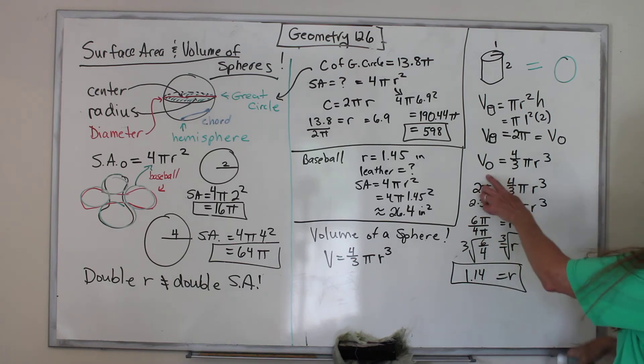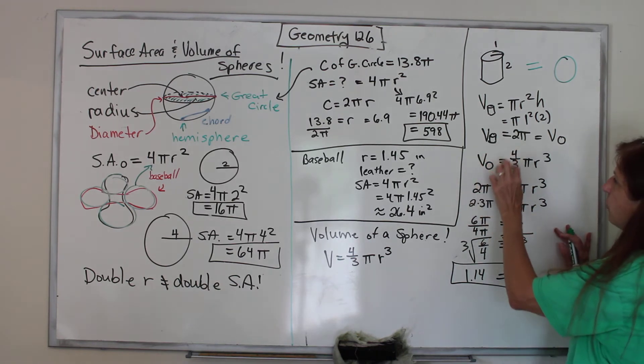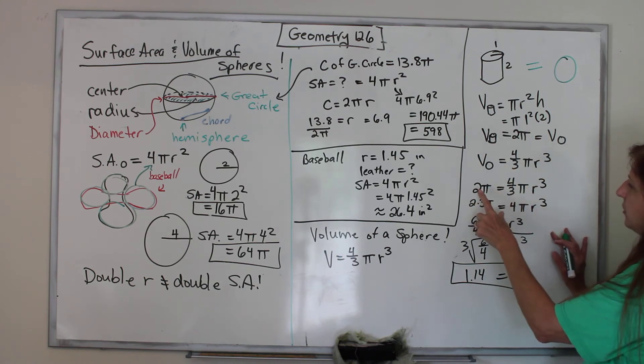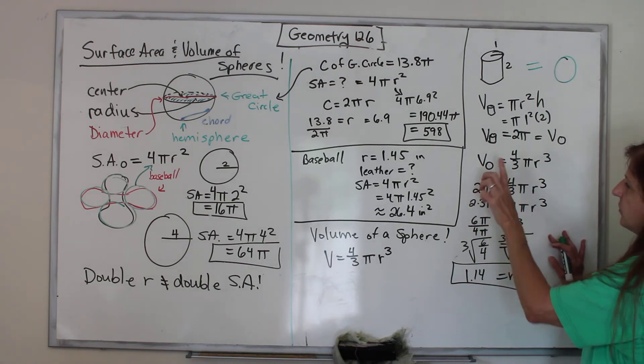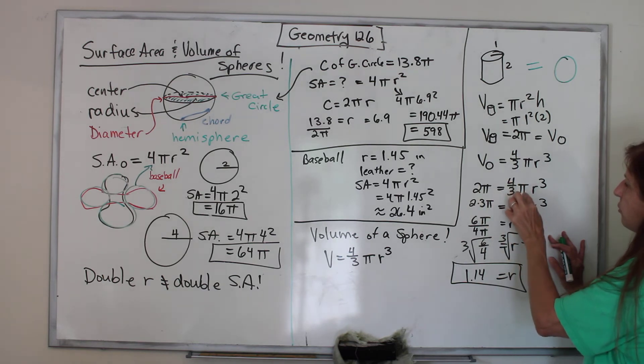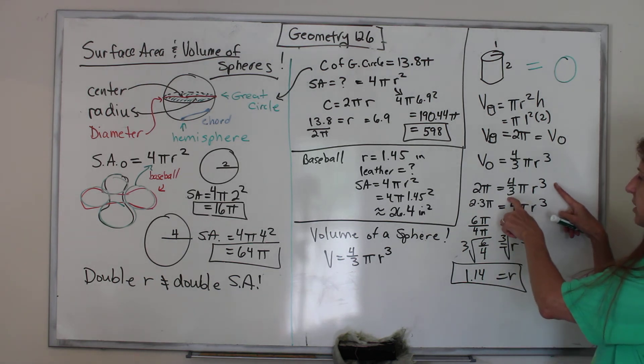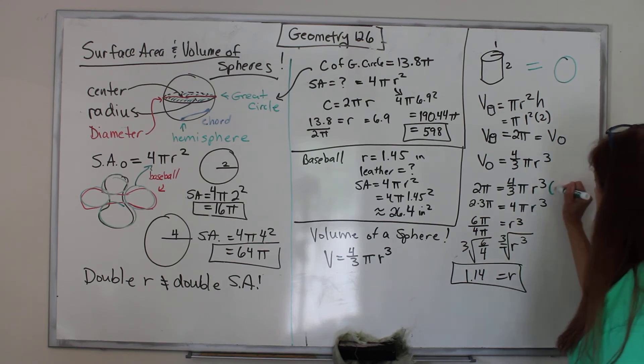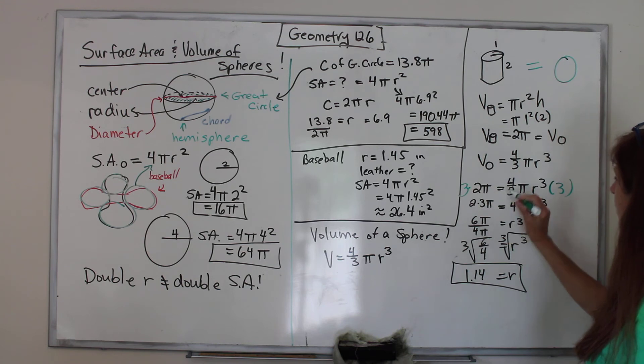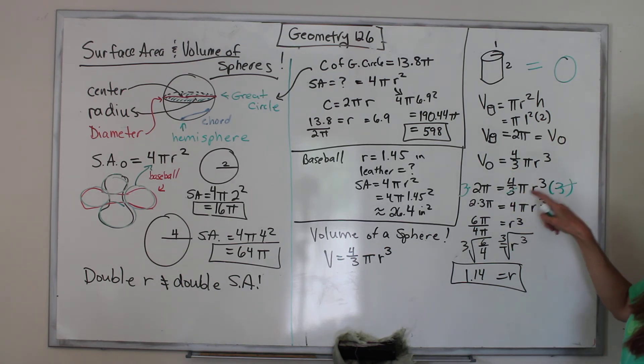Here's our volume of the sphere equation. The volume equals (4/3)πr³. We can substitute in that the volume is 2π. So 2π = (4/3)πr³. We're solving for radius. First, get rid of that 3 by multiplying both sides by 3. The 3s cancel out, and on this side I have 4πr³. On this side I have 6π. Now divide both sides by 4π. The πs cancel out.